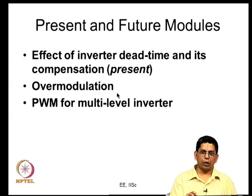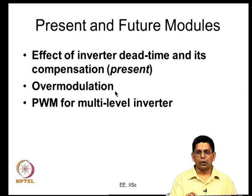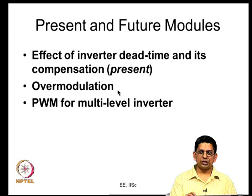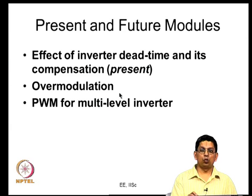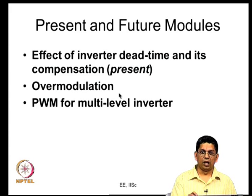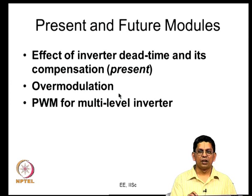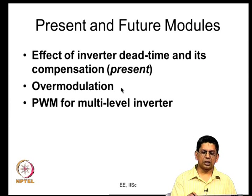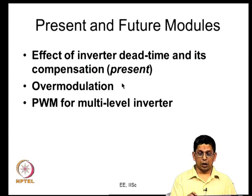In subsequent modules we will look at over-modulation, which is a non-linear region of operation. With sinusoidal triangle PWM you can produce a peak phase fundamental voltage of 0.5 VDC. With common mode injection or space vector PWM you can reach 0.577 VDC (VDC/√3). Going to six-step operation reaches 2/π × VDC ≈ 0.64 VDC. Between 0.577 and 0.64 VDC you must operate in a non-linear range where the reference and actual fundamental voltage are not linearly related.